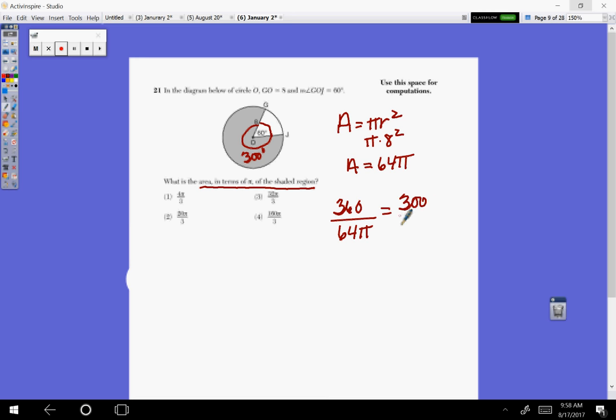equals what angle we're looking at, so 300, to the area. So I'm just going to put as A. That's the area of the sector.